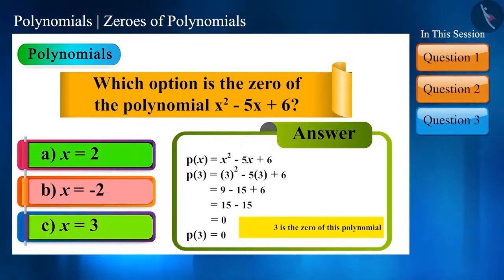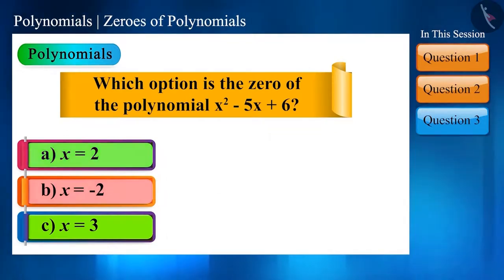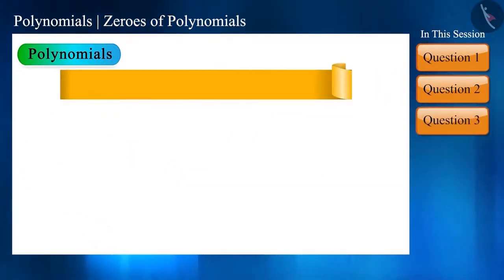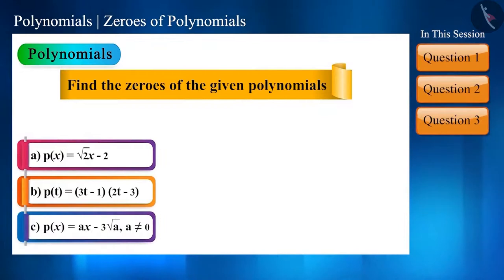Let us now go to the next question. Find the zeros of the given polynomials. To find the zeros we equate polynomial to 0. So let's now first find the zeros of the polynomial.